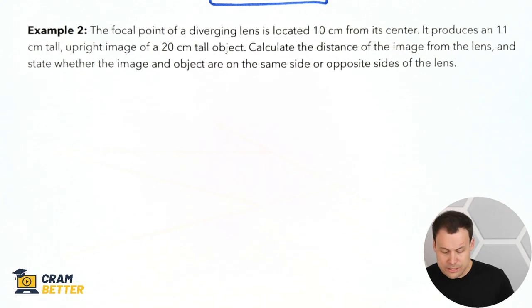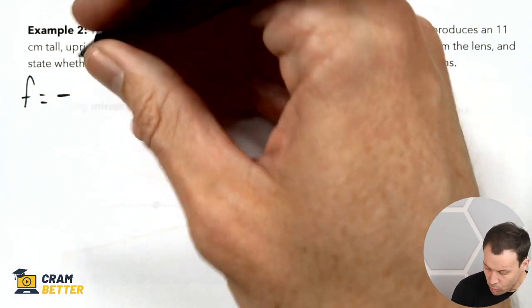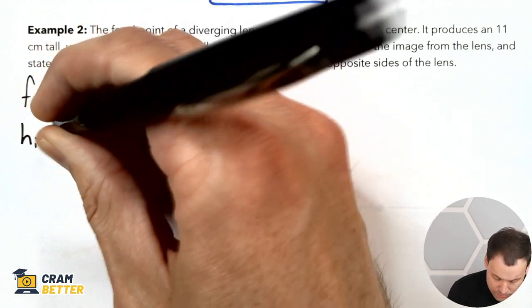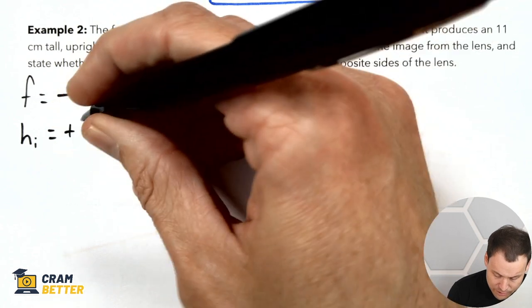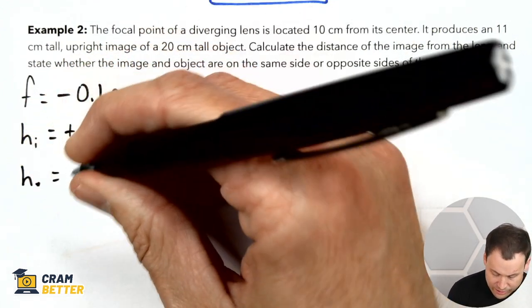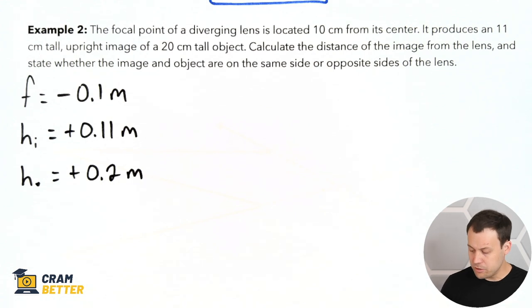Example number two: the focal point of a diverging lens is 10 centimeters from its center — that's the focal length. For a diverging lens, the cheat sheet tells us that's always negative, so F = −0.1 meters. It produces an 11 cm tall upright image, so the image height HI = positive 0.11 meters (upright means positive). The object itself is 20 cm tall, so HO = positive 0.2 meters. We need to calculate the distance of the image from the lens and state whether the image and object are on the same or opposite sides.